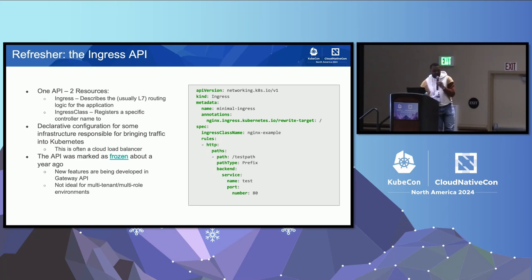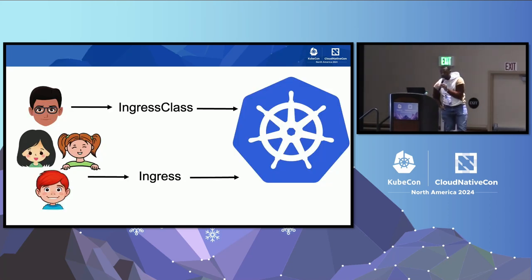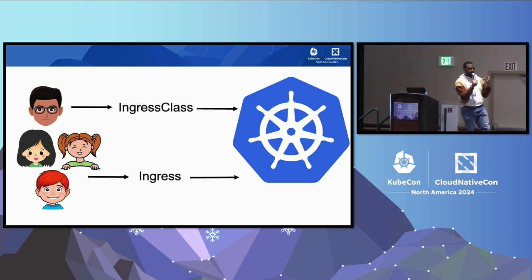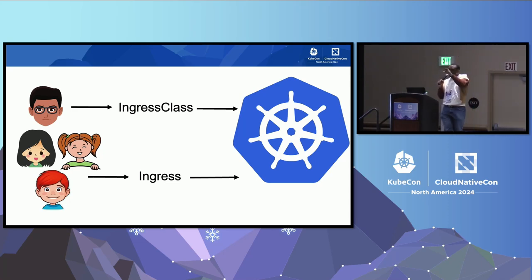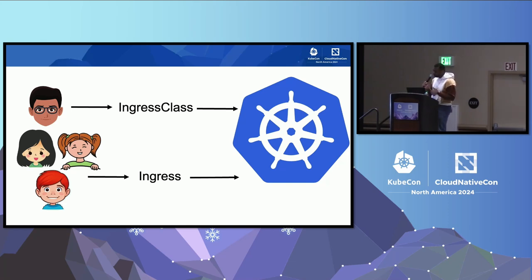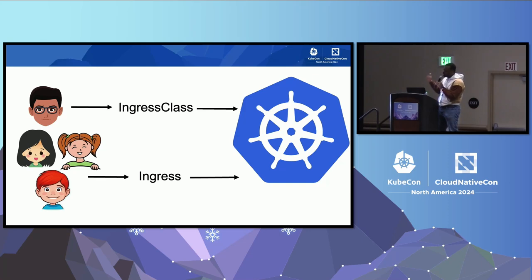This is how we typically see ingress being applied. You've got maybe a platform admin who's installing your ingress controller — maybe Ingress-NGINX or another ingress controller. They're responsible for creating the ingress class that registers that controller. Then app devs create ingress resources, maybe even one per app if the ingress controller supports merging, for their applications. This is the typical breakdown of how the ingress API gets deployed.